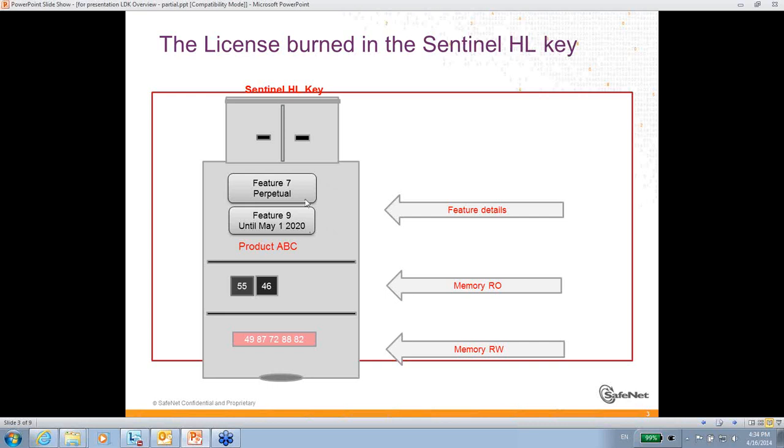So, this means that when the application works and needs feature number 9, it will find it until it is going to be expired on 2020. These features also can be included inside a product. This product name is ABC.